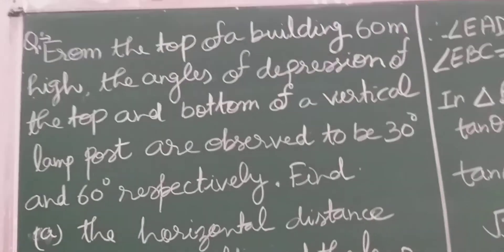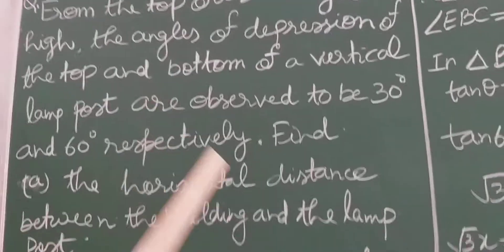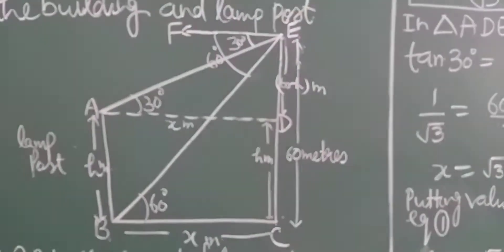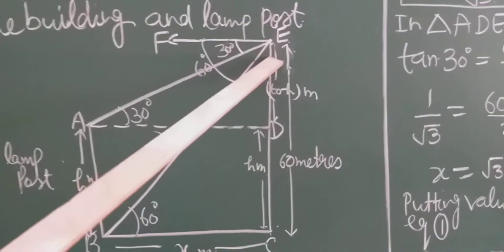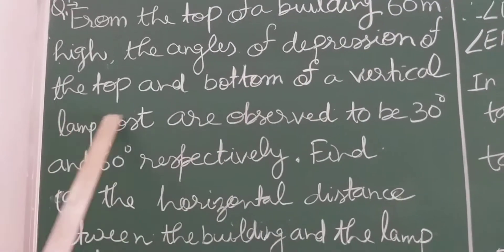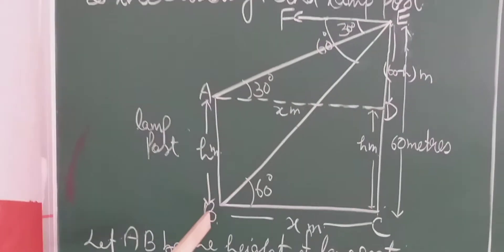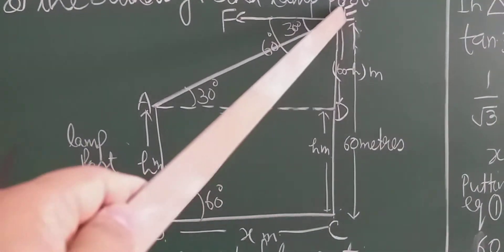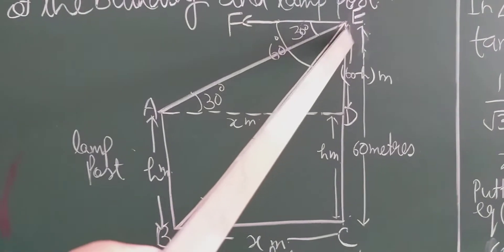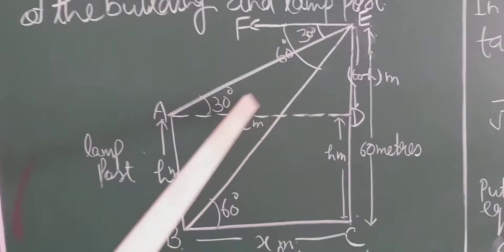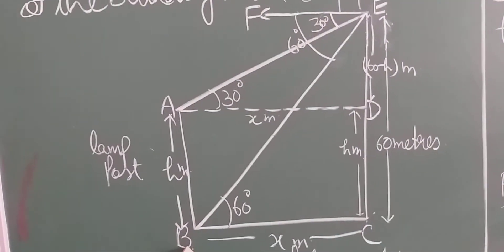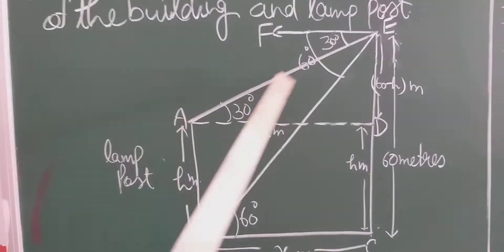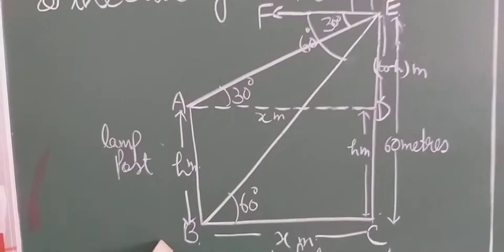Let us draw the diagram. From the top of a building 60 meter high, CE is the building, 60 meter high, and the person is standing at the top of the building. The angle of depression of the top and bottom of the vertical lamppost — this is the lamppost AB. The angle formed from his eye to the top and bottom of the lamppost are 30 degree and 60 degree, so angle FEA is 30 degree and angle FEB equals 60 degree.